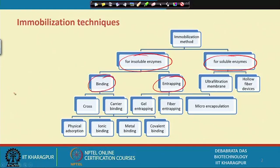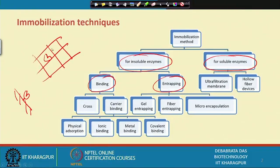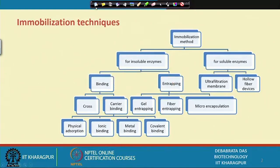Binding means the enzyme is attached to the solid matrix. Entrapping means the enzymes are entrapped inside a gel or fiber. For entrapping, we have gel entrapment, fiber entrapment, and microencapsulation. In microencapsulation, we use an envelope — like a medicine capsule — and similarly, enzymes can be put inside such a capsule. For soluble enzymes, immobilization can be done by ultrafiltration or by a hollow fiber device.